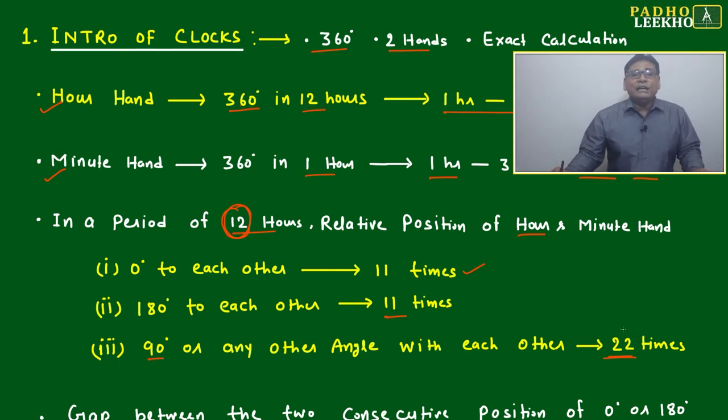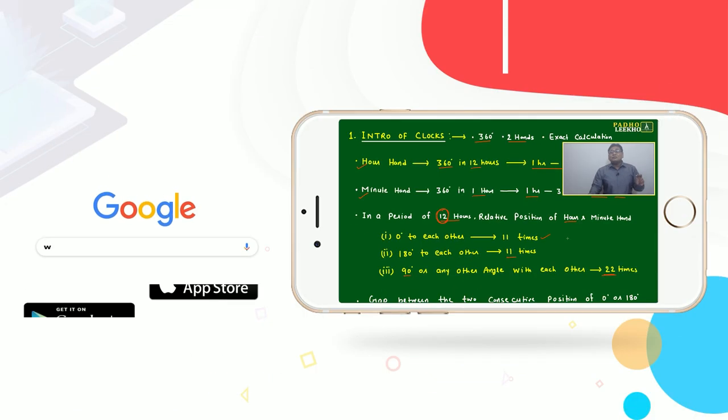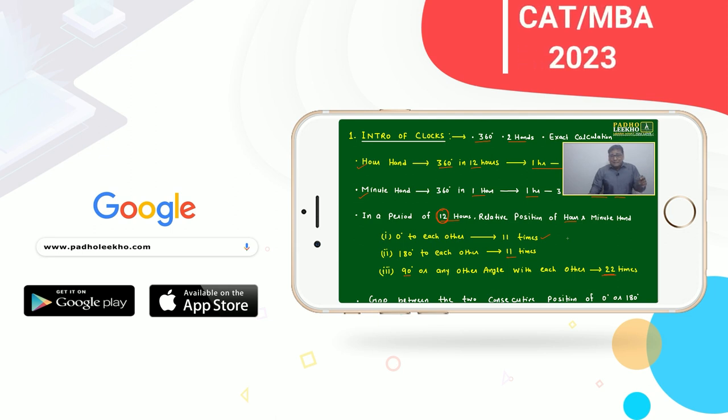It will be 22 times minute and hour hand will be perpendicular to each other. Any angle: 2 degrees to each other, how many times? 22 times. 10 degrees to each other, how many times? 22 times. 75 degrees to each other, how many times? 22 times. Only 0 degrees: 11 times. 180 degrees: 11 times.